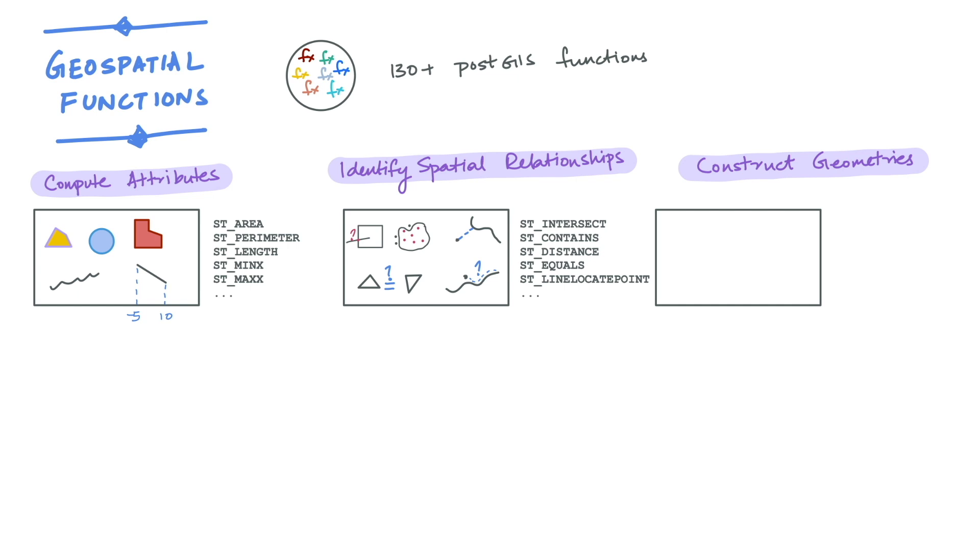The third set of functions construct new geometries, either from scratch or using other geometries. Examples include constructing the centroid of a polygon,